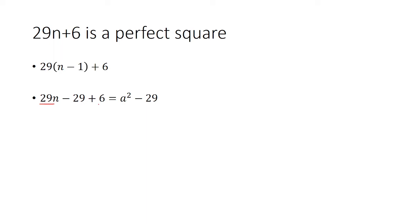Recall that 29n + 6 = a², so we have a² - 29. If a² - 29 is a perfect square, it must equal (a-1)².